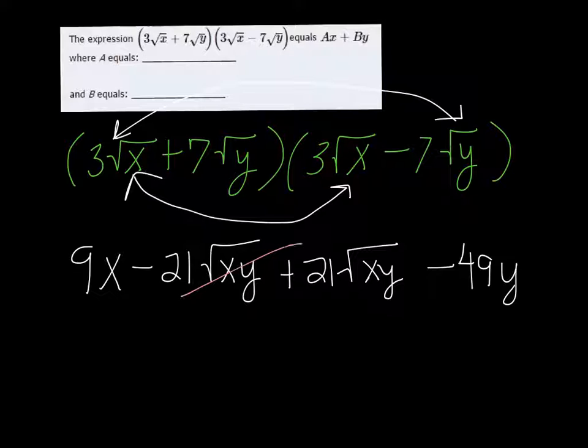So these middle terms cancel out - plus and minus - and all we're left with is 9x - 49y.